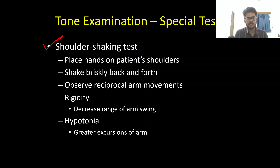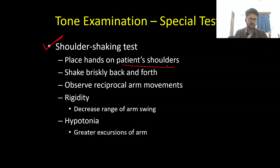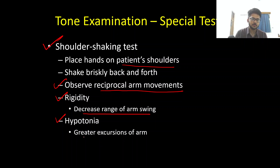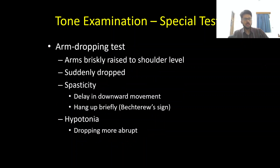The shoulder shaking test: the patient is seated, and we place our hands on the patient's shoulders, shaking them briskly back and forth, observing the reciprocal movements of the arms. In rigidity, there is a decreased range of arm swing, whereas in hypotonia these reciprocal arm movements are much greater, with a larger excursion of the arms.